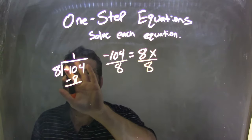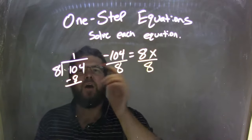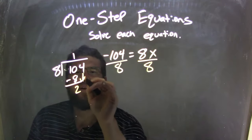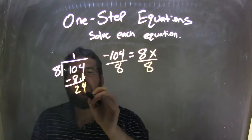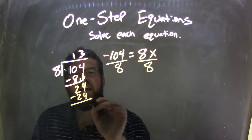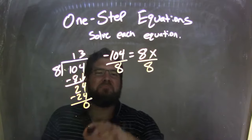We'll just worry about the negative at the end. 10 minus 8 is 2. I bring down the 4. So the 8 goes into 24 three times, because 3 times 8 is 24. And 24 minus 24 is 0. I'm done.